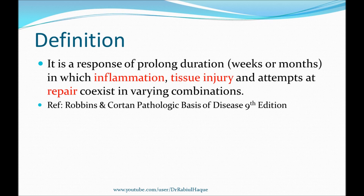The second part of the definition is even more important because three things are happening simultaneously in chronic inflammation, although there is variation in their combination. You can see that I have marked them in red color in the text. They are: inflammation, tissue injury, and also attempts at repair. So all three things — inflammation, tissue destruction and necrosis, and attempt at repair — are happening simultaneously during chronic inflammation.